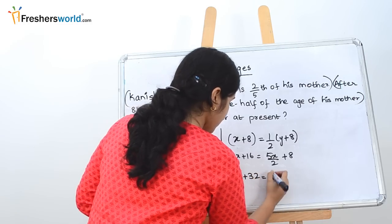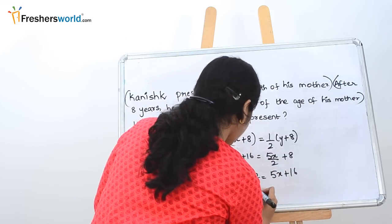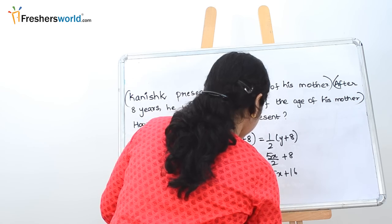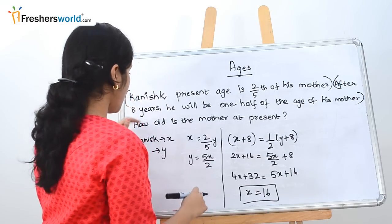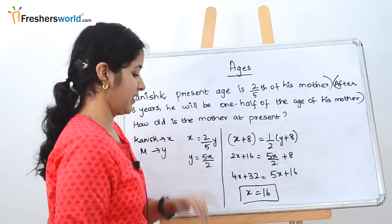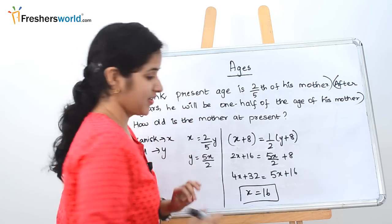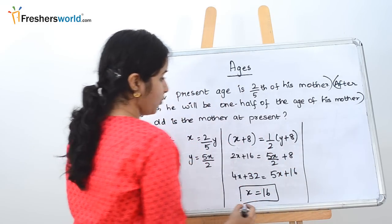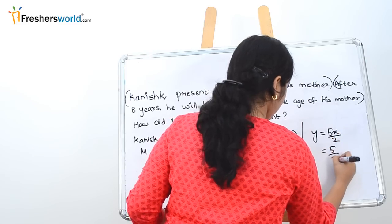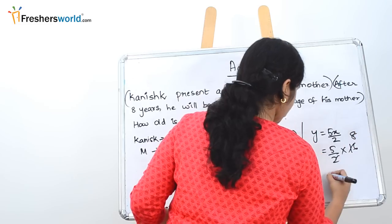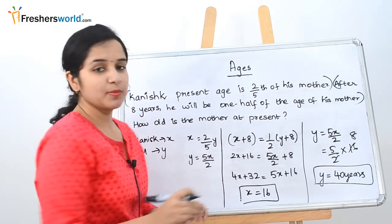Cross multiply: 2(x + 8) = y + 8, giving 2x + 16 = y + 8. Substituting y = 5x/2: 2x + 16 = 5x/2 + 8, so 4x + 32 = 5x + 16, meaning x = 16. So Kanish's age is 16. But read the question — they are asking for the mother's age at present. We know x = 16, so y = 5x/2 = 5 × 16/2 = 40 years. The mother of Kanish is 40 years old at present.